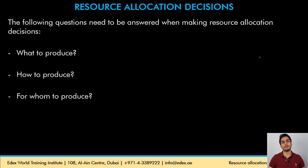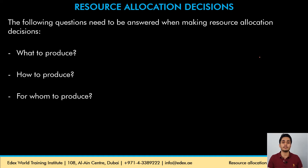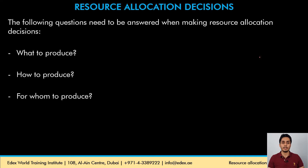Finally, the last question is for whom to produce. A private producer in a market economy produces for those who have the capability to pay — whether luxury products for the very rich or basic necessities for those who can afford them. People who cannot afford basic necessities will not get goods and services in a market economy. In a planned economy, the government produces for the whole society without differentiating between rich and poor, with decisions again based on the economic aims to be achieved.